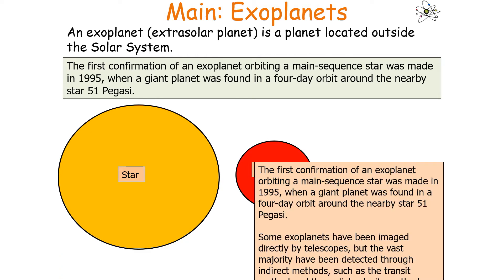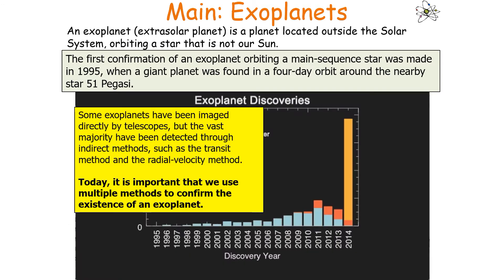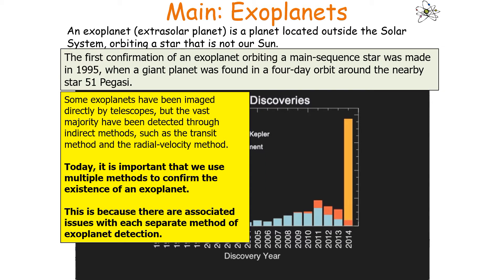Some exoplanets have been imaged directly by telescopes, but the vast majority have been detected with indirect methods, such as the transit method or the radial velocity method. The majority have been discovered indirectly, as you can see on the following diagram. It's important to note that we use multiple methods today to confirm the existence of an exoplanet, because there are associated issues with each separate method of detection.